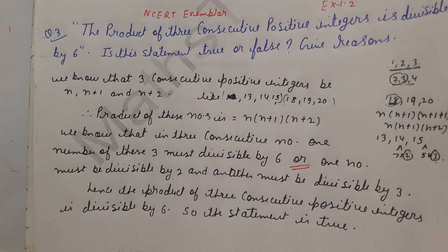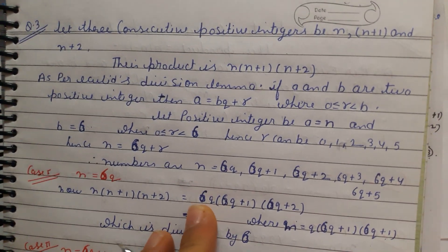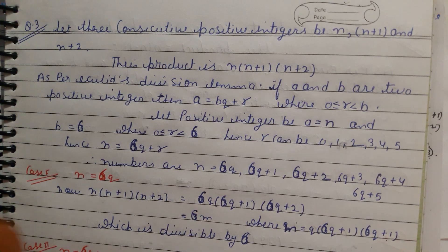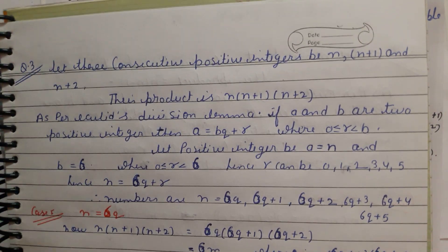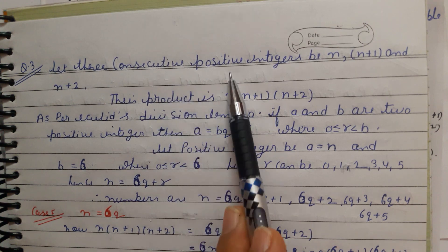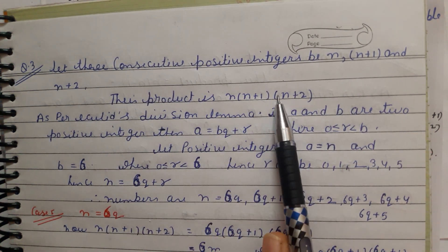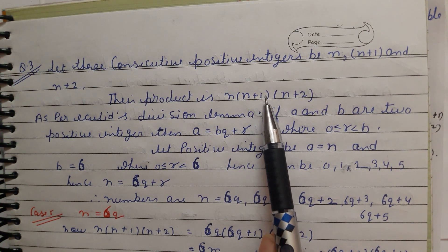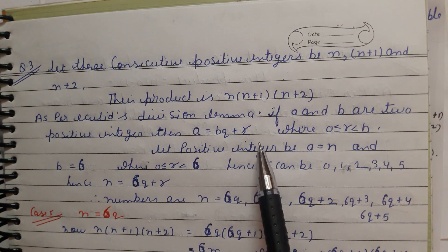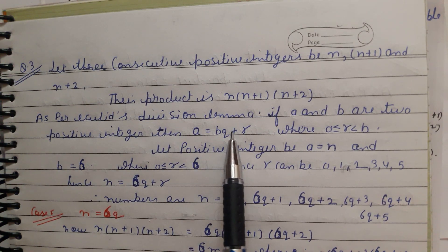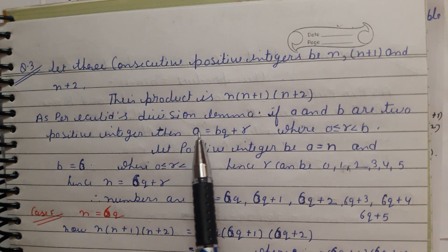This is what we write when the question is 1 or 2 marks. But if the question comes for 3 or 4 marks, you have to write a detailed answer. Now you will study in exercise 1.3 and 1.4. For the detailed answer: let 3 consecutive positive integers be n, n+1, and n+2. Their product is n(n+1)(n+2). Now we have to prove divisibility by 6 using Euclid's Division Lemma.